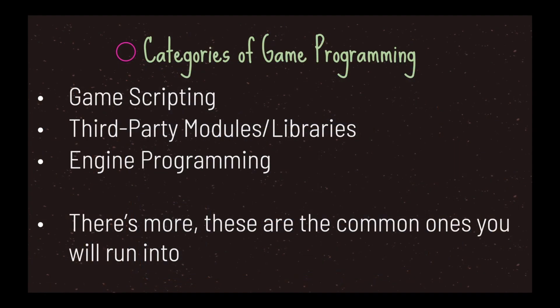Hello and welcome to another episode in the Godot Basics tutorial series. In this episode we'll be taking a look at categories of game programming. In your programming journey you'll run into three different types of areas of game programming: game scripting, third party modules, and engine programming. However these are the common ones you'll find yourself running into.